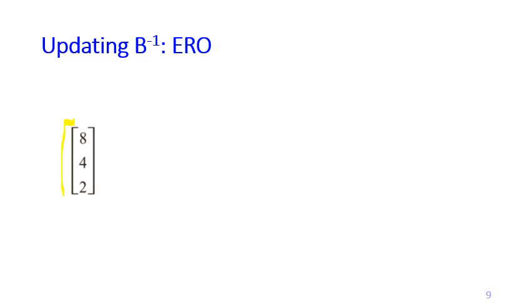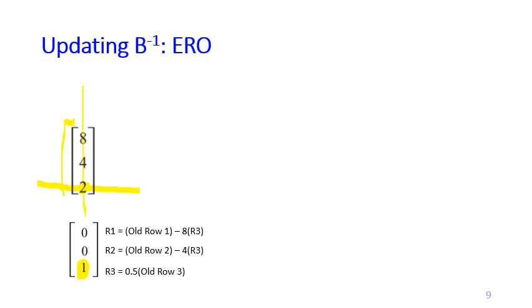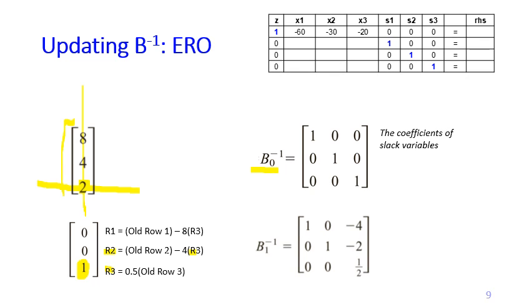The original column for x1 needs to become [0, 0, 1] since S3 on the third row is the leaving variable, making the third-row position the pivot. We perform elementary row operations: new row 3 = 0.5 × old row 3; new row 2 = old row 2 − 4 × new row 3; and so on. We apply the exact same row operations to B-inverse from iteration 0, automatically obtaining the new B-inverse for iteration 1.